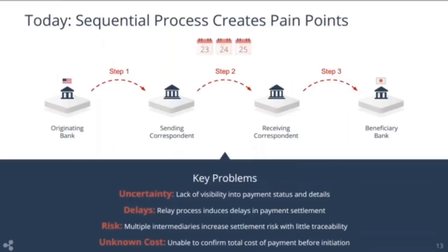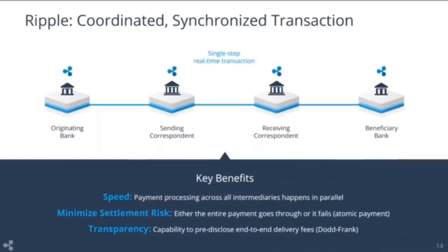Ripple is looking to resolve these pain points by changing the process — moving from a sequential process to a coordinated process, where the transaction happens in one step, executed across all the links in the chain simultaneously. This enables, first, speed: Ripple reduces settlement times from around five days to about five seconds. We also enable full transparency of where the payment is in the process, and certainty of total cost — the originator knows the total cost up front before initiating the payment. This transparency and certainty is a core competency of the solution.